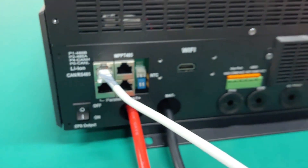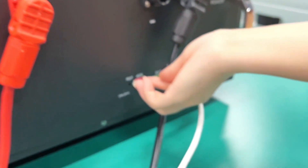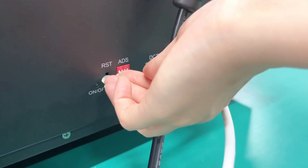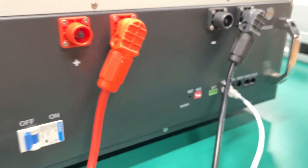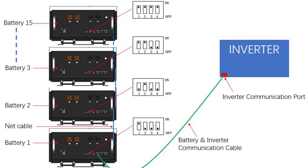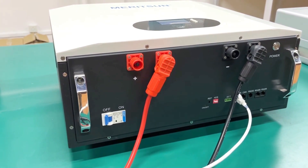Please take this important step: dial the address of the battery to one. When multiple batteries are in parallel to communicate with the inverter, the dial address of the master battery and slave battery must be different. Also, use a LAN or network cable to connect each battery's RS485 port, so the batteries can communicate with each other.